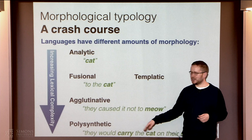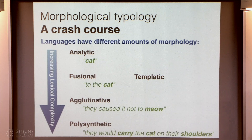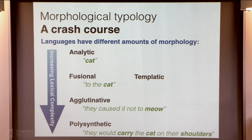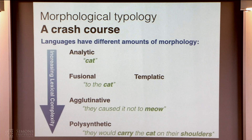In an agglutinative language like Turkish, you might have a single word form that means something like 'they caused it not to meow' or something like that. And then there are even more complex languages called polysynthetic languages, which can contain full propositions in single words. There aren't very many of those — there are very few speakers of these languages left. It's not like German where words come together; the pieces fit together but behave differently than words in a sentence do. There are diagnostics, some of which are controversial.